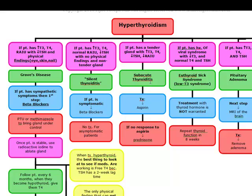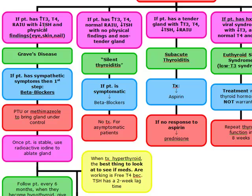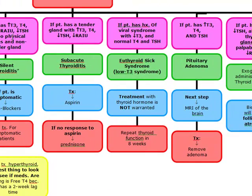Next is subacute thyroiditis. Just like Graves' and silent thyroiditis, subacute thyroiditis has an increased T3, increased T4, and decreased TSH. However, this patient has a tender gland and a decrease in the radioactive iodine uptake. Whereas Graves' has an increased RAI uptake and silent thyroiditis has a normal RAI uptake, subacute thyroiditis has a decreased RAI uptake. In silent thyroiditis the gland is non-tender; in subacute it is tender. For subacute thyroiditis, you treat the inflammation with aspirin, and if they don't respond to aspirin, give prednisone.